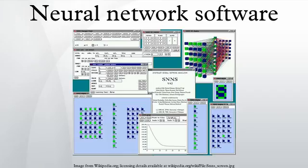the most common type of neural network software was intended for researching neural network structures and algorithms. The primary purpose of this type of software is, through simulation, to gain a better understanding of the behavior and properties of neural networks.